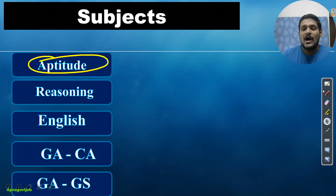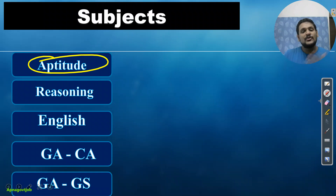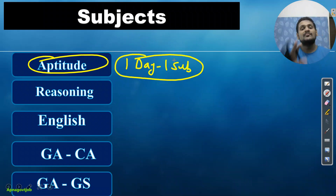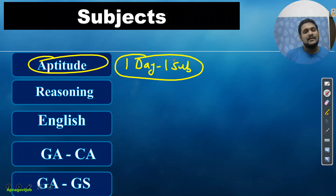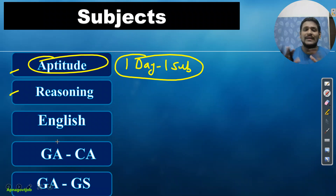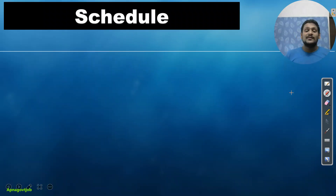For at least the first 15 days, we will follow one subject per day. For now this is the plan: one day, one subject. So if today is Monday we have the aptitude test, Tuesday is reasoning, Wednesday is English, and so on. This is your planning for the free master plan batch.